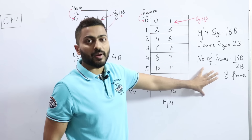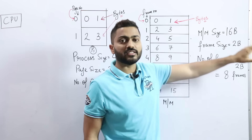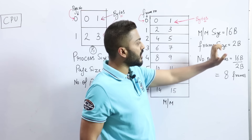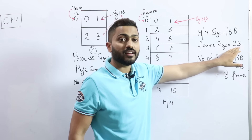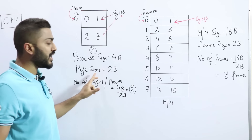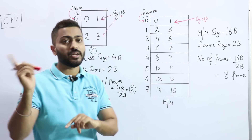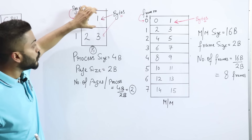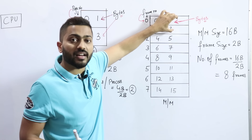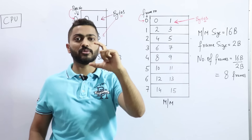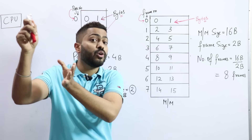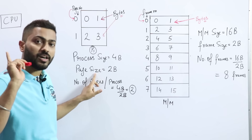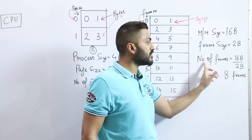Now let's look at the main memory. Let's assume the main memory size is 16 bytes — although it's very small, it helps clarify the concept. The frame size is 2 bytes. An important point: the frame size and the page size should always be the same. We have calculated the total number of frames.